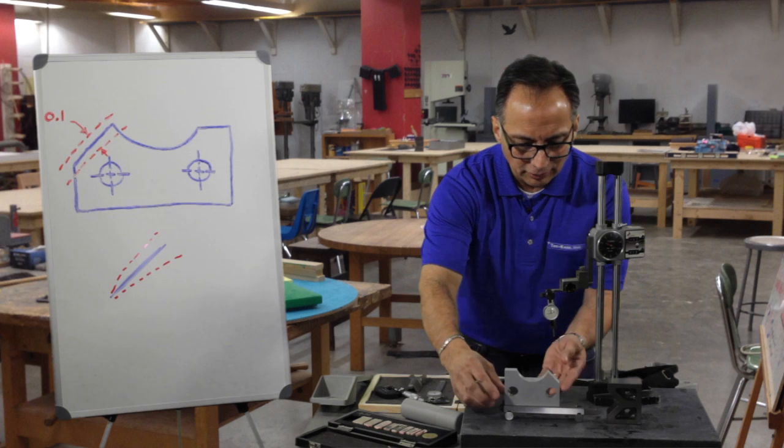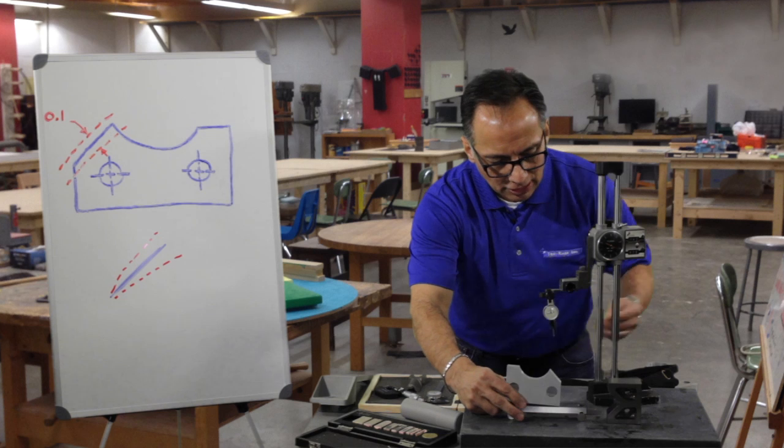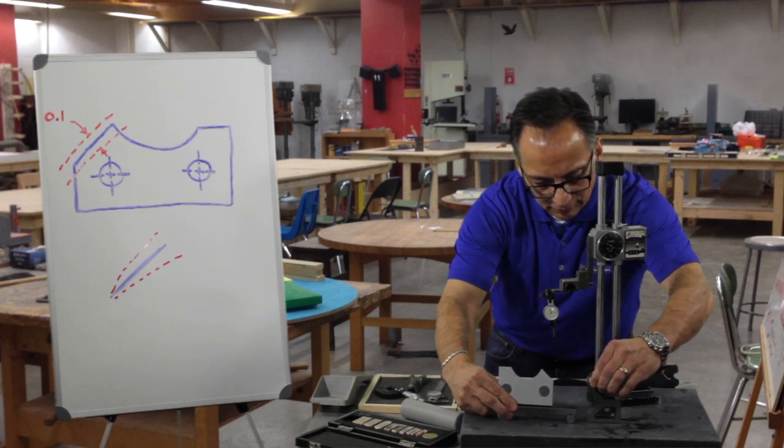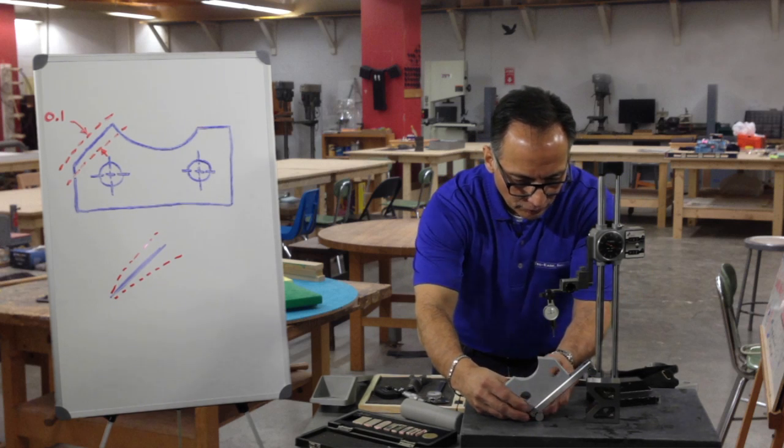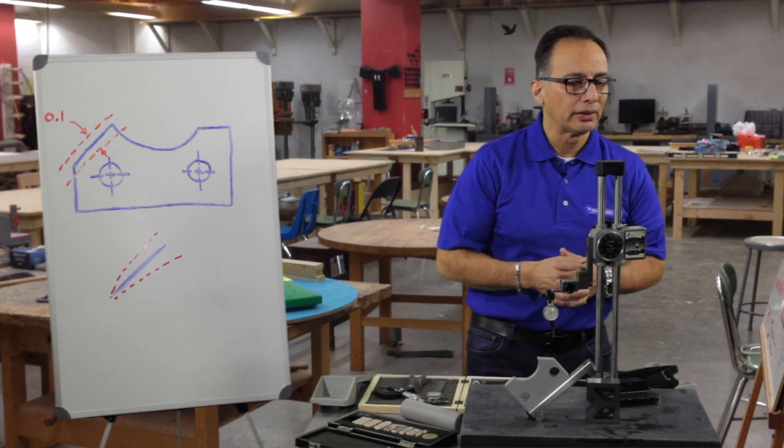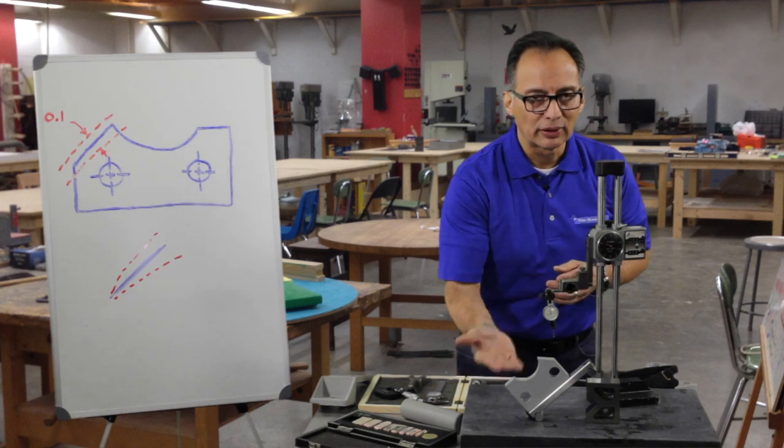And we have a sine bar here. The sine bar helps us level out the angle. And I may have to supplement a little bit to get it to the correct height and level. And so if I do this, we've leveled out the angle. Say it's a 45 degree angle. I've tilted it enough to make that angle parallel with the granite plate.